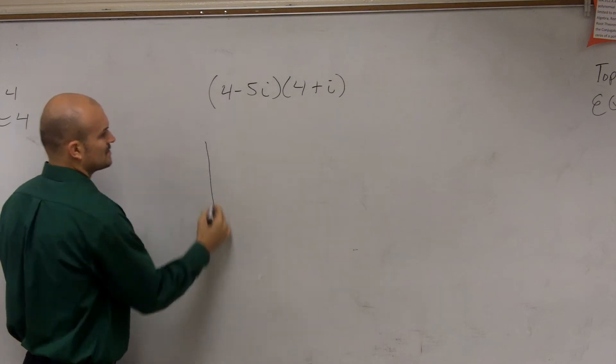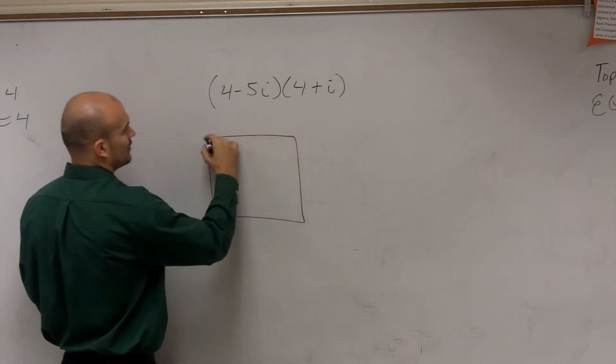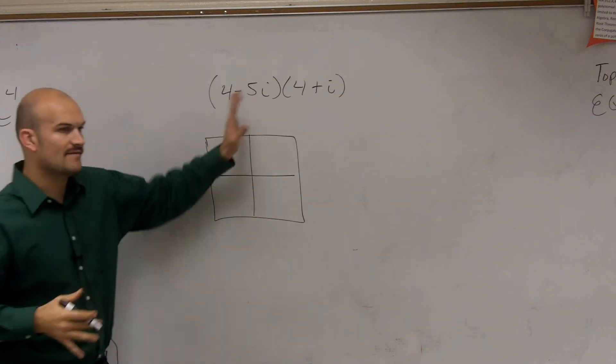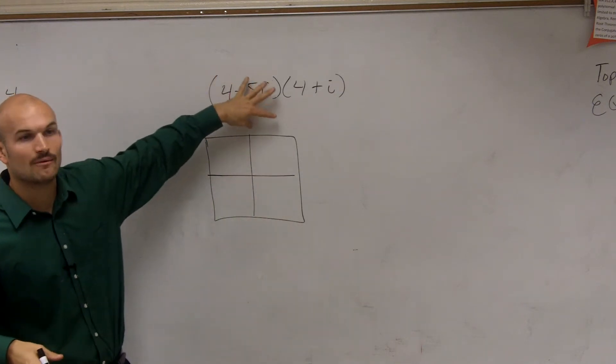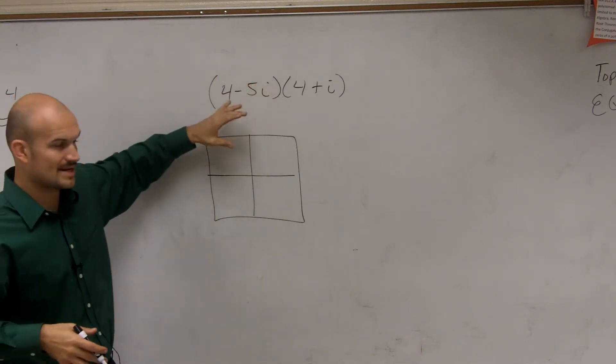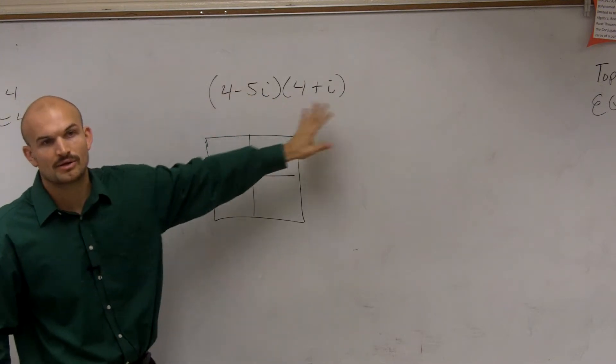I kind of prefer sometimes, especially when I'm getting a little bit tricky, what we can look at is if I have a binomial, we can write the binomial on one side of a square or a rectangle, and we can write the other binomial on the other side.